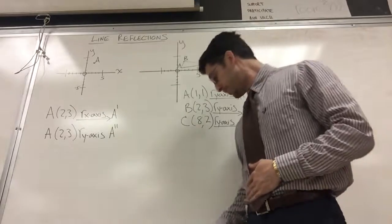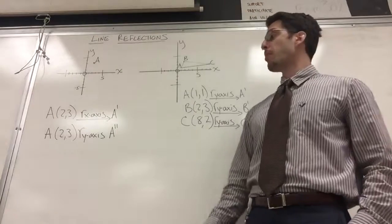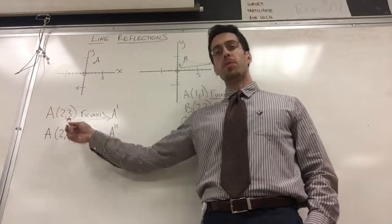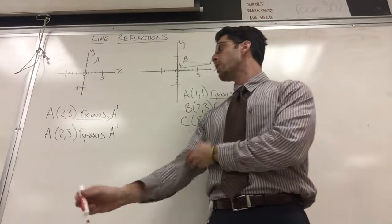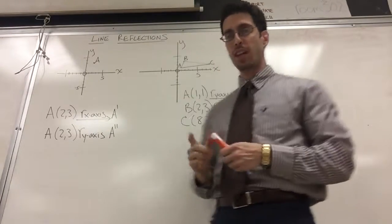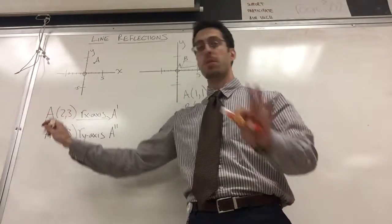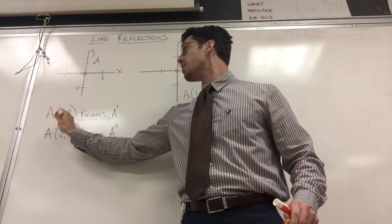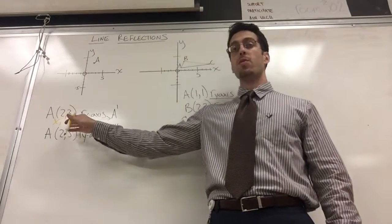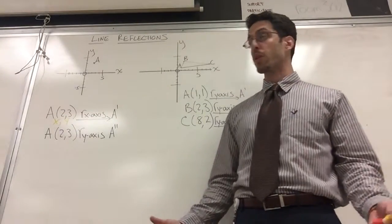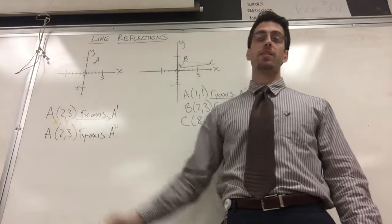Okay, so take a look at my point A. If I plot point A which is two comma three, some people don't even know how to plot points. If you're not sure, your point is x comma y. Okay, so two is the x, three is the y. The horizontal axis is the x-axis and the vertical axis is the y-axis.